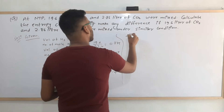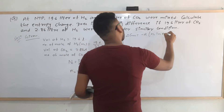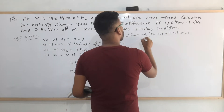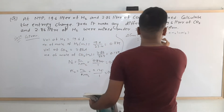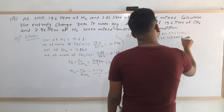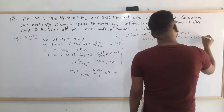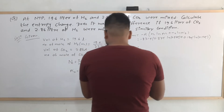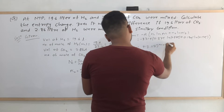Now let's calculate ΔSₘ for this case. The formula is: ΔSₘ = −R(χ1 ln χ1 + χ2 ln χ2). Substituting the values: −8.314 × (0.875 ln 0.875 + 0.125 ln 0.125). Evaluating this gives +3.117 joules per mole per kelvin.